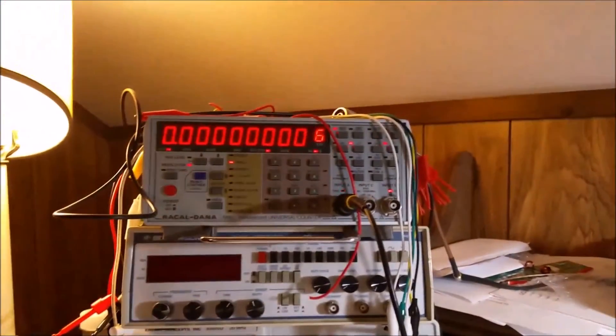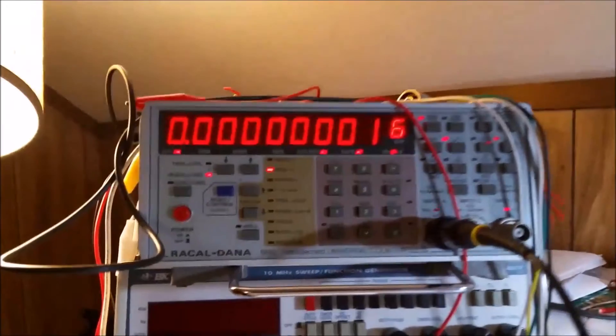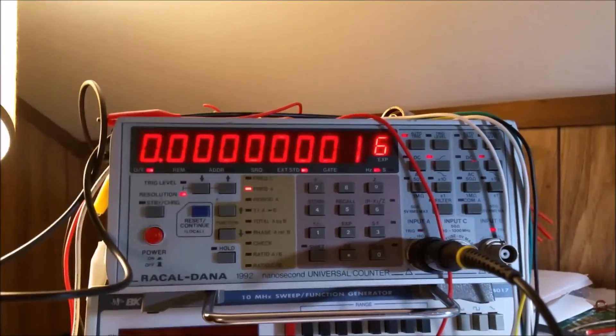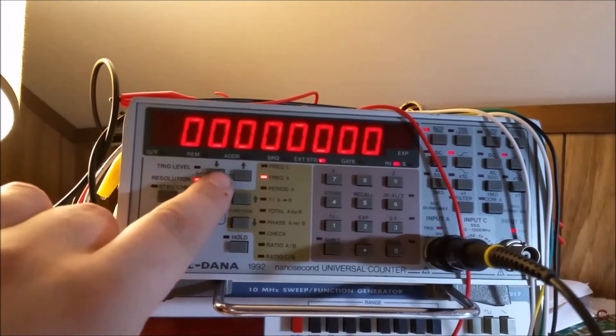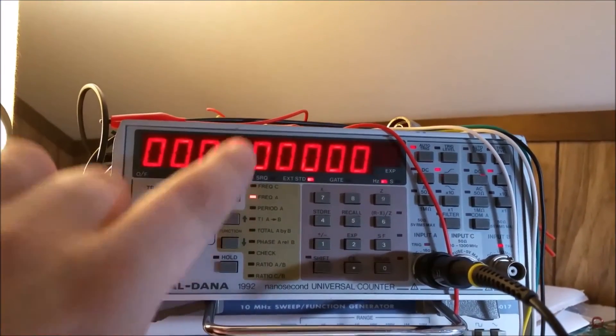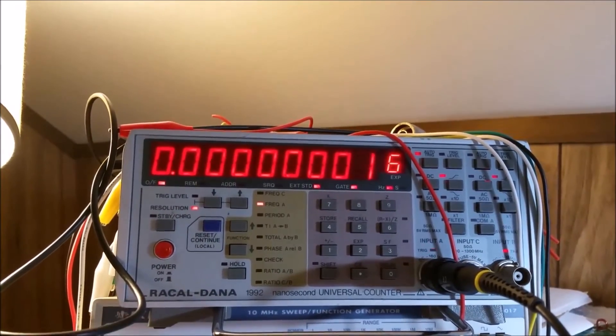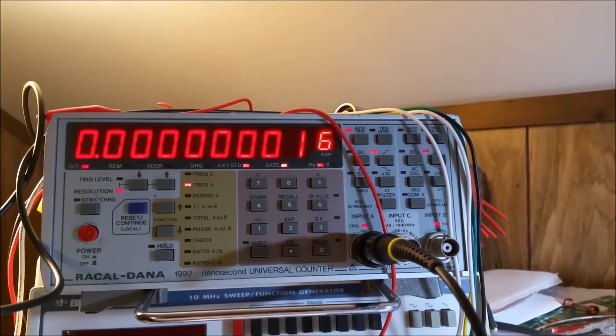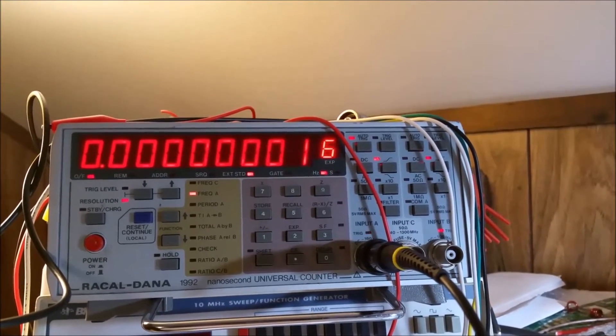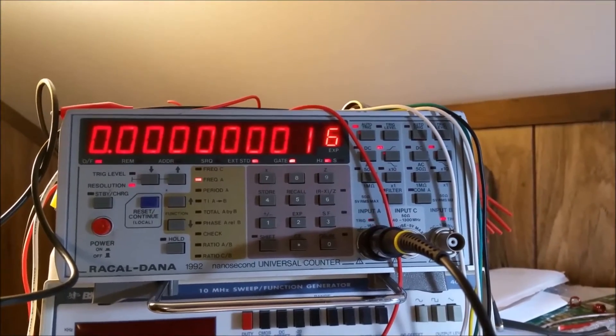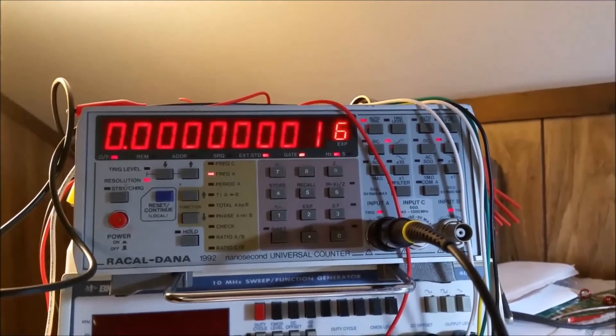I have it going into my frequency counter here, which I have tied to my external GPS standard. And you can tell I have it on the highest resolution I can. But you can tell it's outputting 10MHz. And then if I increase the resolution you can tell it's fluctuating by about 0.01 MHz. It pops from 0.0 to 0.1 every so often.